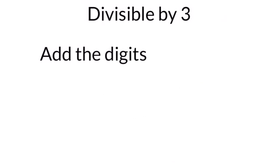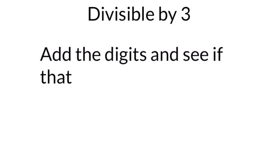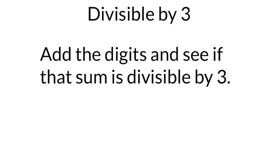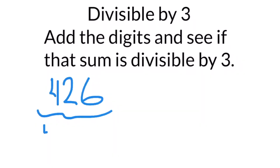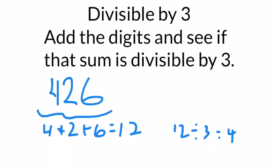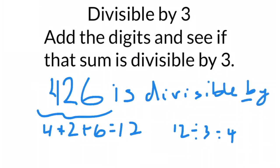To determine if a number is divisible by three, it's a little more work. You need to add all the digits of the number, and if that sum is divisible by three, then the original number is divisible by three. For example, is 426 divisible by three? Add all the digits: four plus two plus six is 12. Since 12 divided by three is four, 426 is also divisible by three.